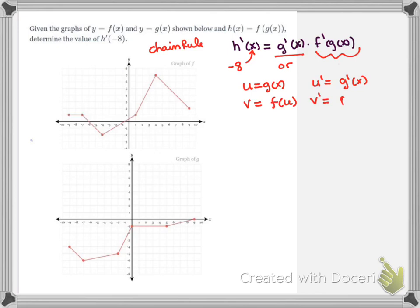v prime would then be f prime with the inside function u plugged back in. So that means g prime will be the slope on the g curve because that's what the derivative is. So as I look at the g curve, well down here the slope is the slope of this line—I go up 1 and over 4. So that means g prime of 8, which is u prime, is equal to 1 fourth.